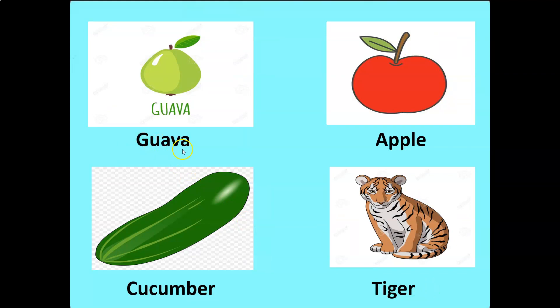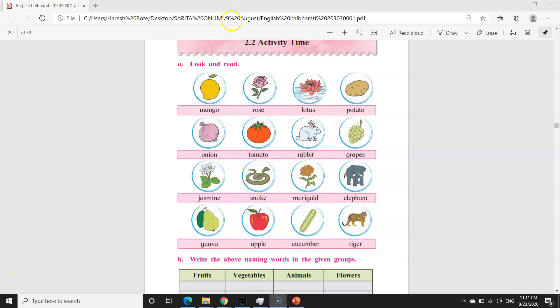Guava G-U-A-V-A, manzhe Peru. Apple A-P-P-L-E Apple, Saffarchand. Cucumber C-U-C-U-M-B-E-R Cucumber, manzhe Kaakdi. Tiger T-I-G-E-R Tiger. 2.2 Activity time A Look and read.